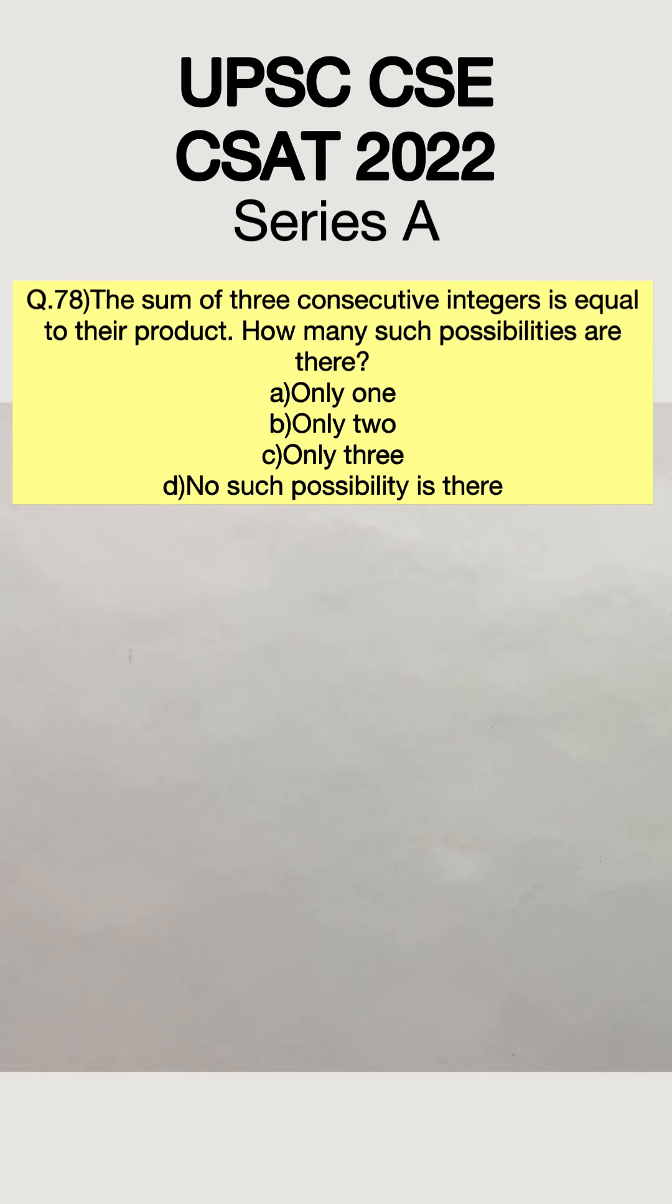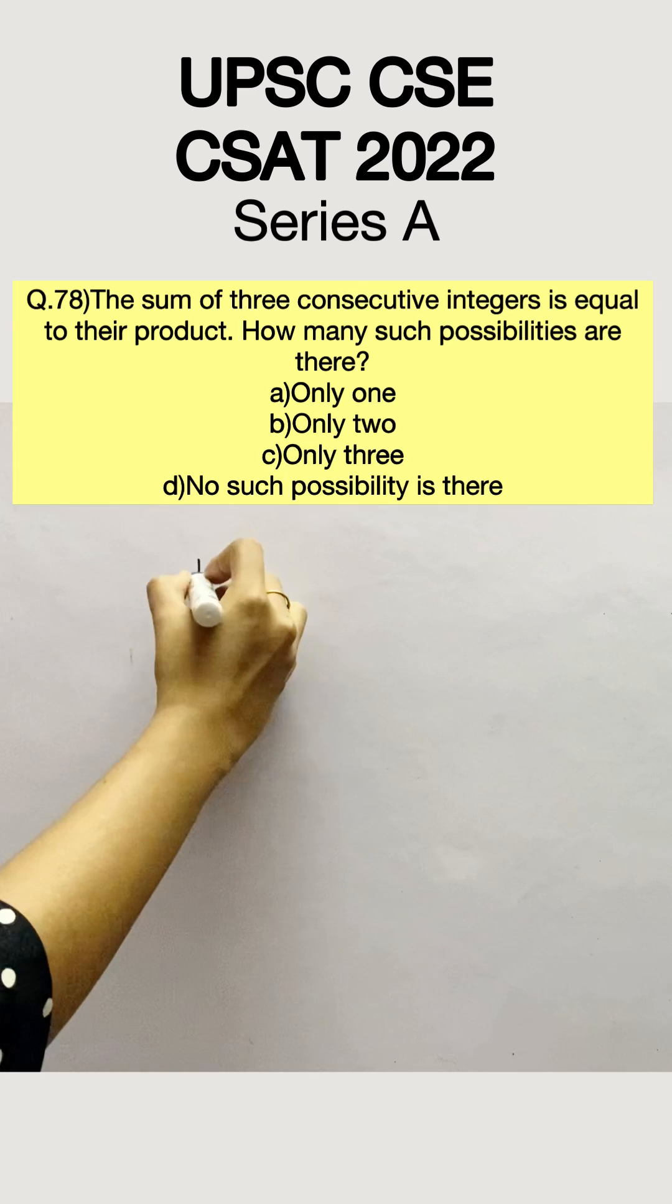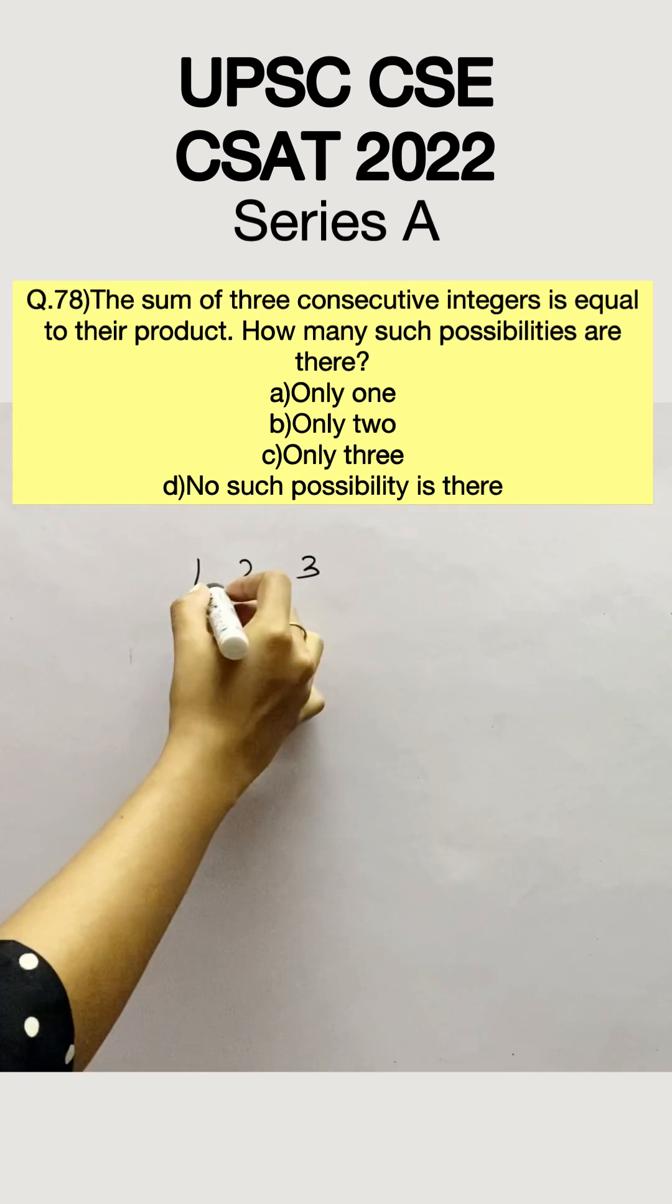The sum of 3 consecutive integers is equal to their product. How many such possibilities are there? Let's take 1, 2, 3 for instance.